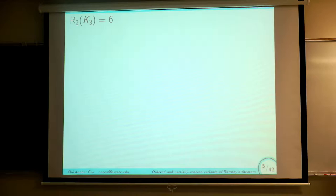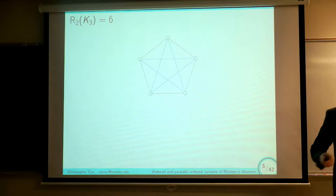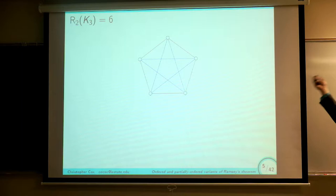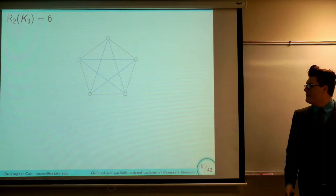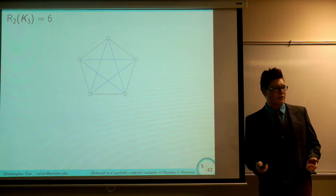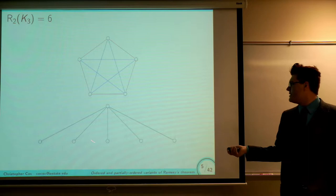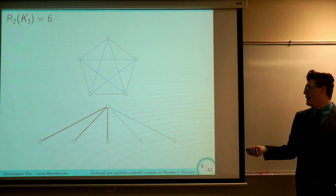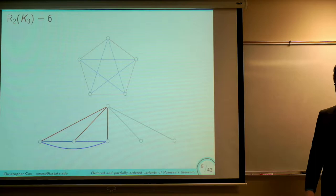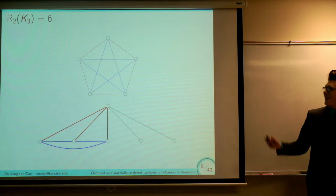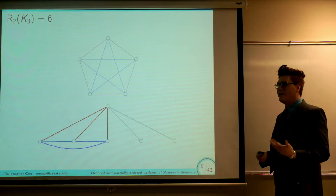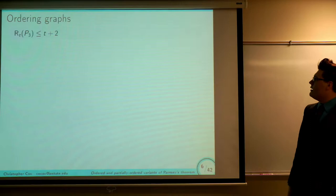Pretty much anyone who's taken an undergraduate course in graph theory knows this. To show it's at least 6, we need to show a two-coloring of K5 that avoids monochromatic copies of a triangle — and there one is, with 5 vertices having no triangles in either color. The standard argument to show it equals 6: no matter how you color the edges of K6, you always end up with a monochromatic triangle. Start with 6 vertices; by the pigeonhole principle, 3 of the edges from one vertex have to be the same color, say red. If any edge between those three neighbors is red, we get a red triangle; otherwise all three are blue, giving a blue triangle. So R2(K3) = 6.